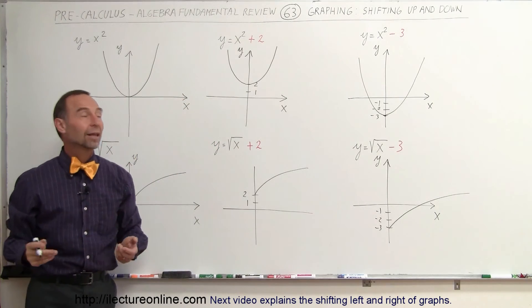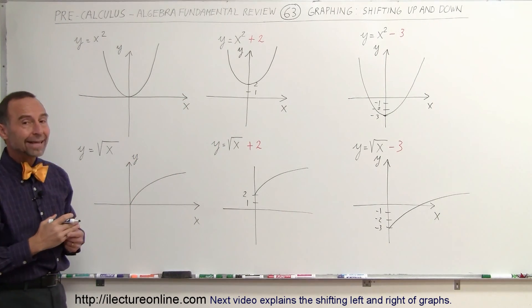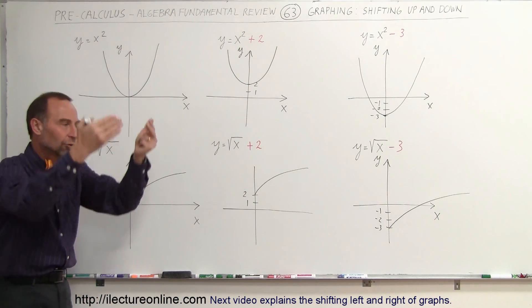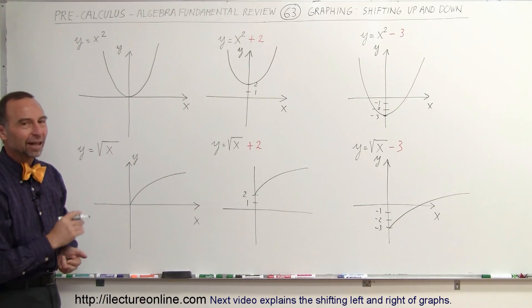And so that's how we do that, that's how we graph things. When we add a constant at the end, or we subtract the constant at the end, it just takes the whole graph and lifts it up that many units, or drops it that many units. And that's how we graph that.